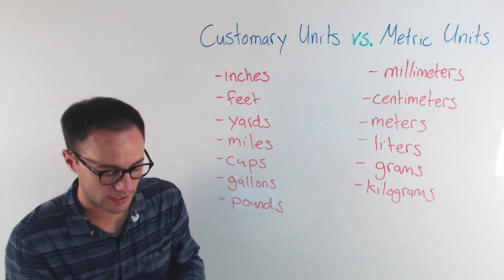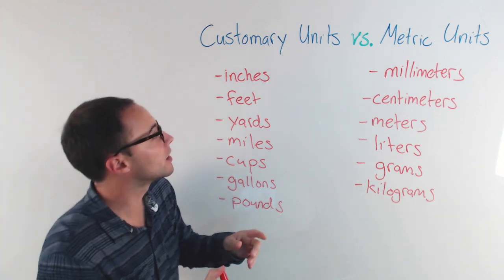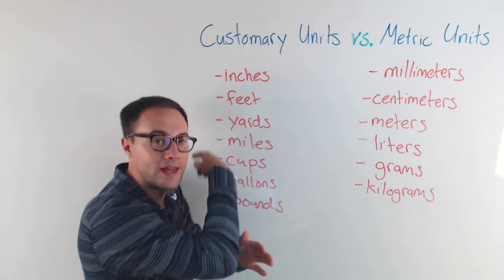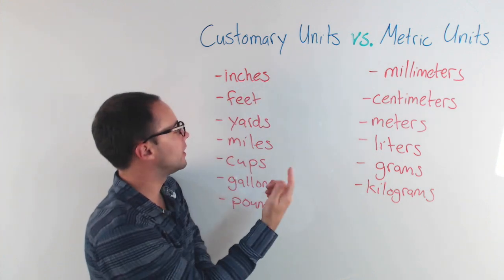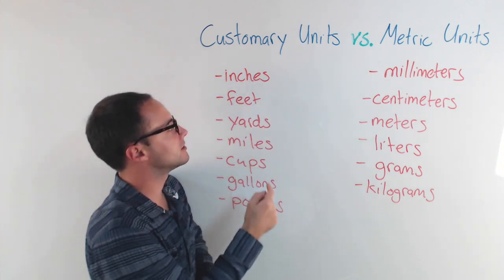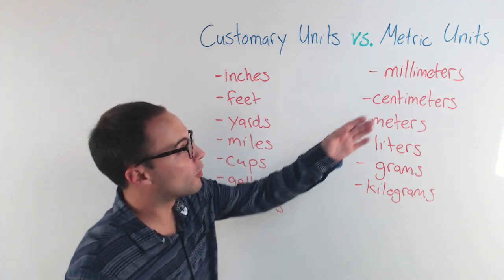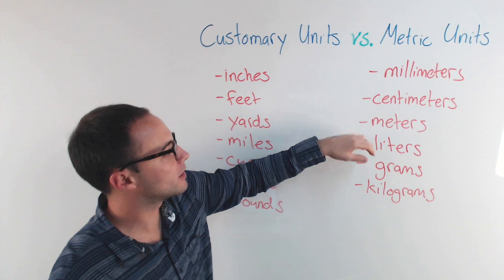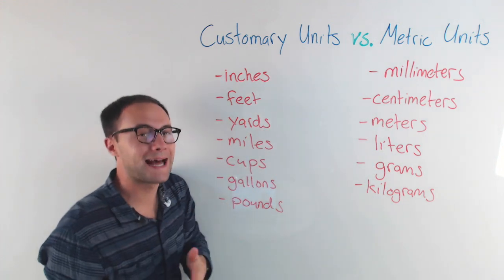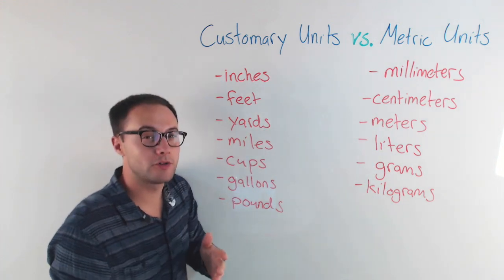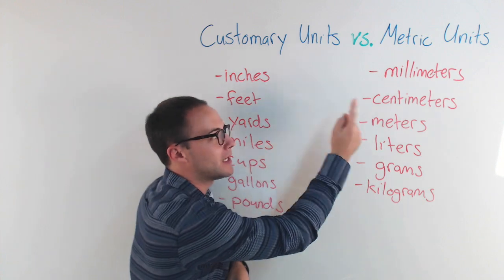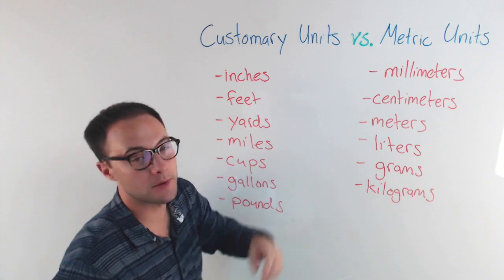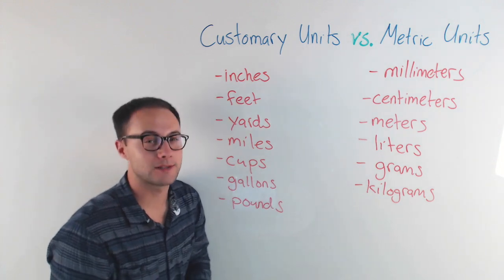So those are the two systems we're going to be talking about, and you should be already pretty familiar with converting within one system, right? So going from feet to yards or inches to feet. Or metric is even easier, going from centimeters to meters or meters to millimeters. But what you might not have done, and what we're going to do today is going between both. So maybe going from miles to centimeters. So that's what we're going to talk about today.